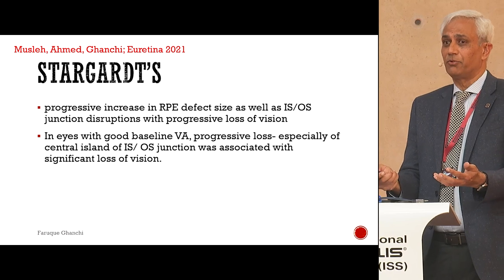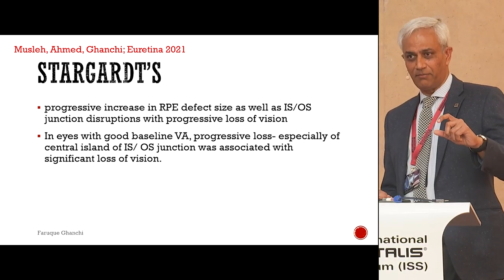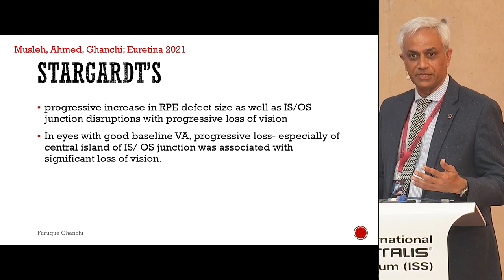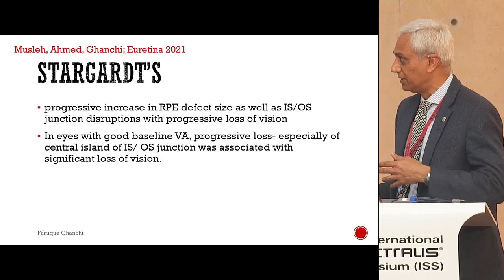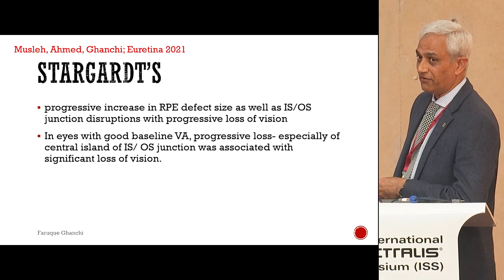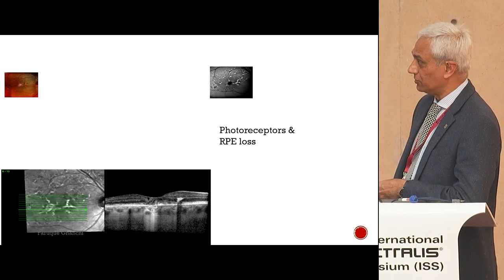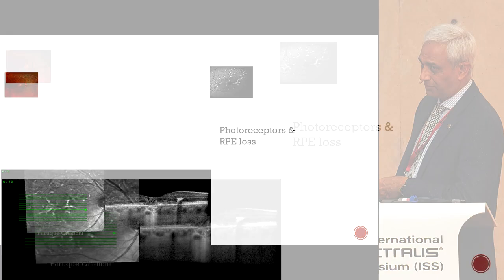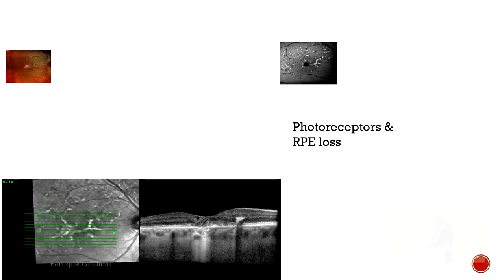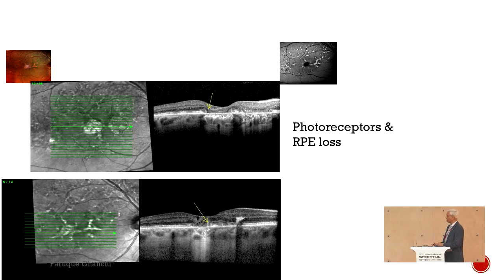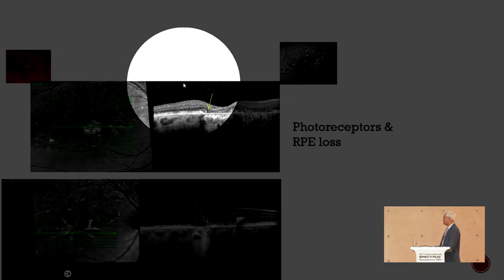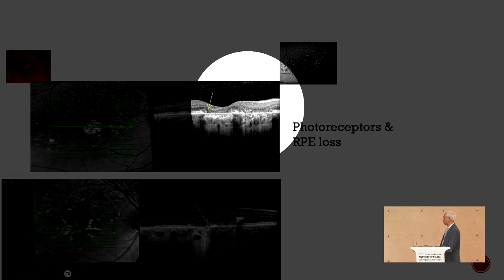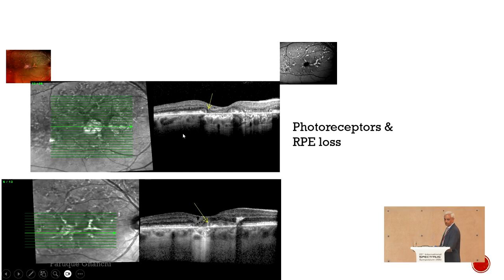We suggest looking at those layers rather than just measuring thickness in the clinic. However, from a busy clinic's point of view, it's easier to have a mathematical number that tells us which way the patient is progressing. But when you want to look at prognostic features, it might be very useful to look at the outer retina. Here is one example of that patient with Stargardt's disease and you can see how the anatomy changes with time — there is atrophy at baseline that gets worse with time, with fast expansion of loss of photoreceptors.